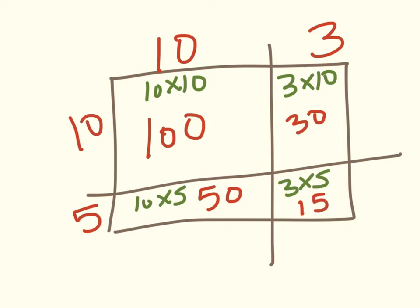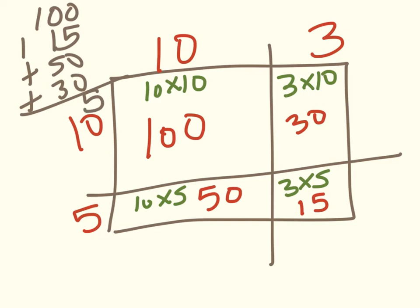Now I can take all of these smaller pieces. When I'm talking about smaller pieces, I'm talking about these numbers here. And all I have to do is add them up. So I'm going to add 100 plus 15 plus 50 plus 30. And that's 5, 8, 9, 195. So now I'm thinking that the answer to my question is 195.